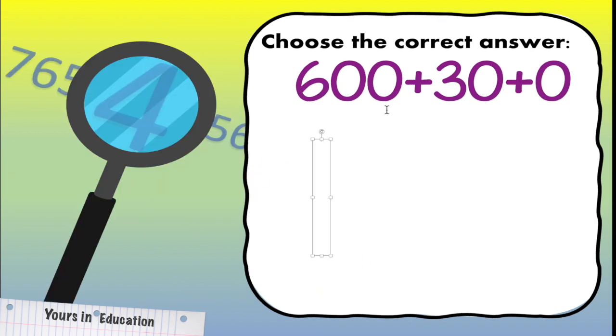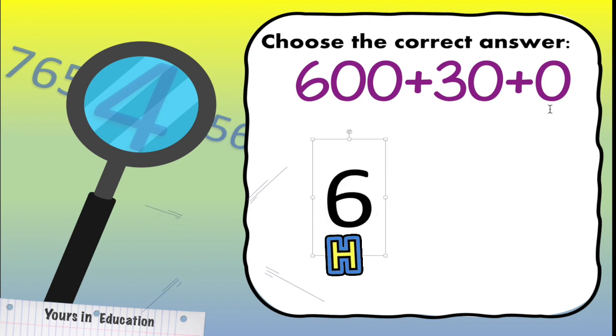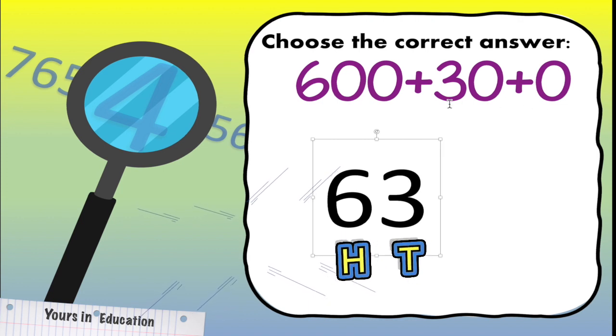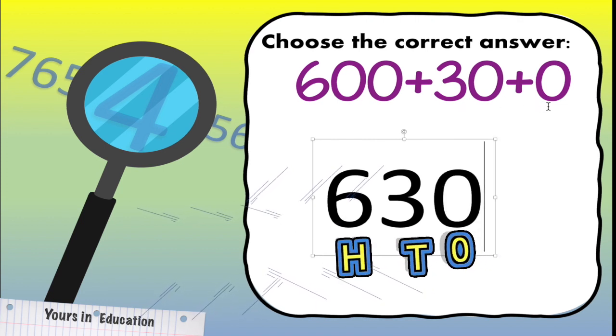Now we have 600 plus 30 plus 0. Okay, so I'm going to write a 6 on the hundreds place, and then a 3 on the tens place, but I don't have any ones. So I'm just going to leave it like that.